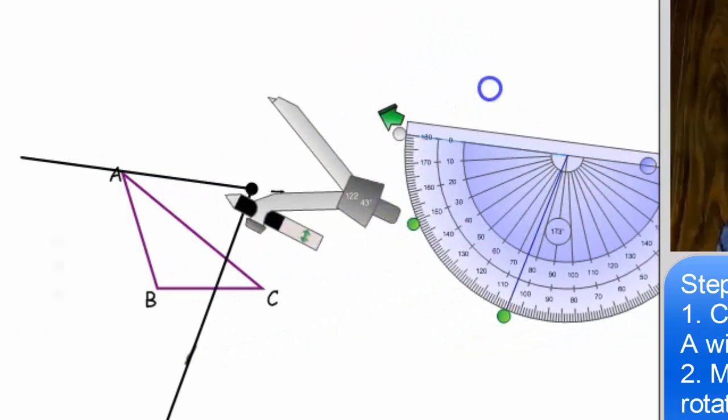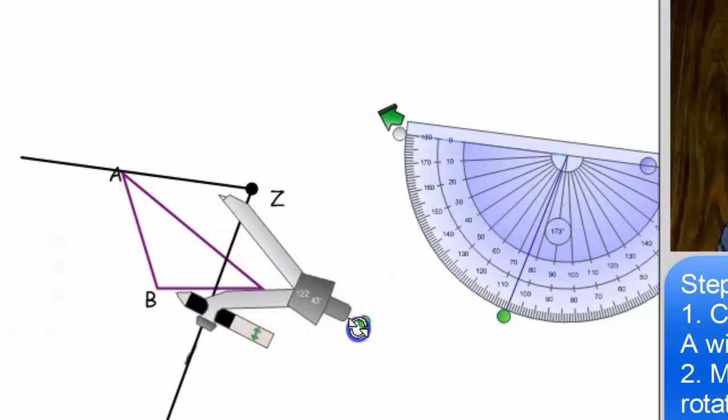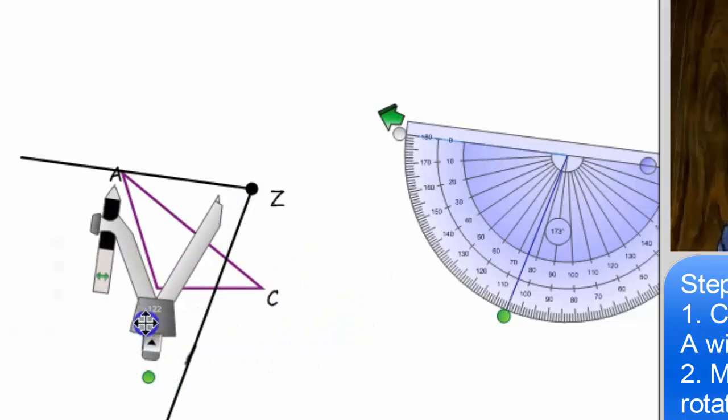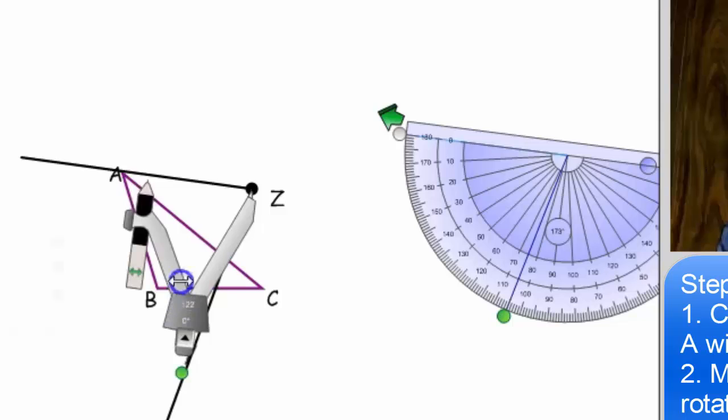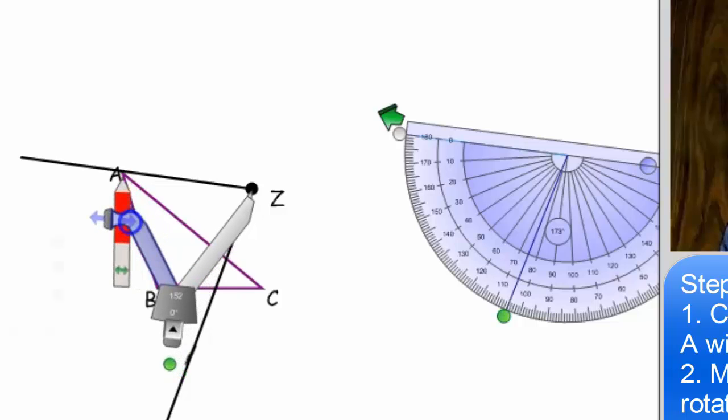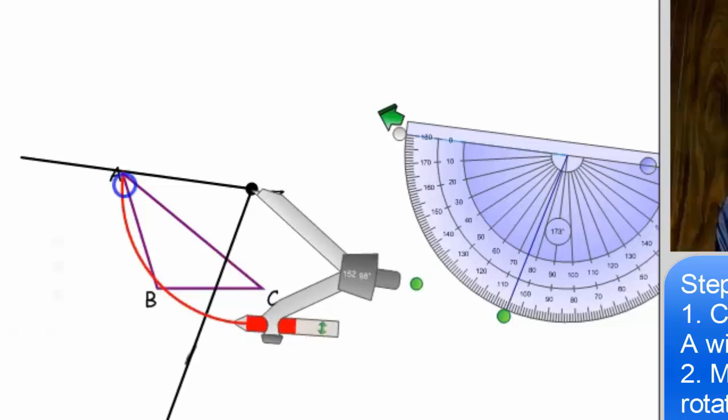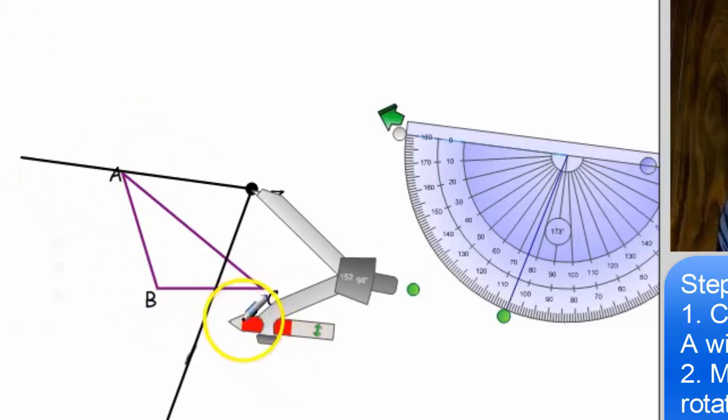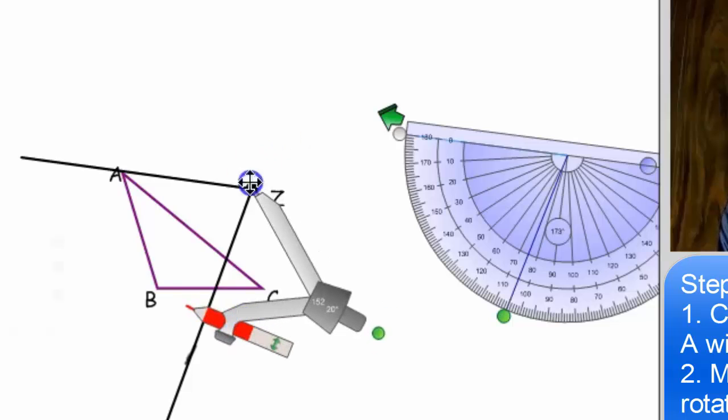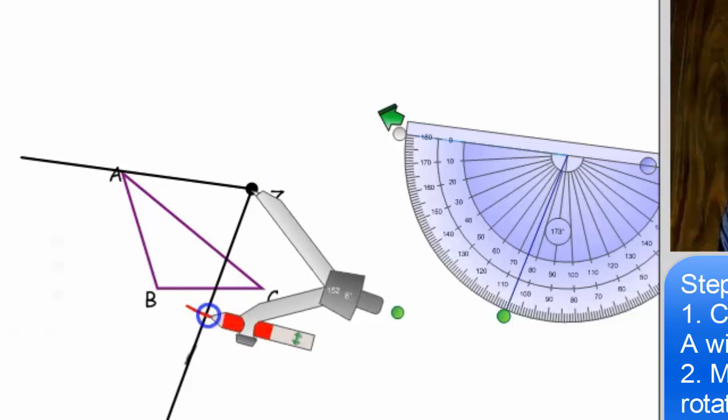This is where our compass comes in because we're actually going to use our compass to measure from point Z to point A. We're going to use it to measure point Z to point A and here's where we actually rotate it. We don't need to draw that whole arc. We just need the part where it intersects with that line that I just sketched.